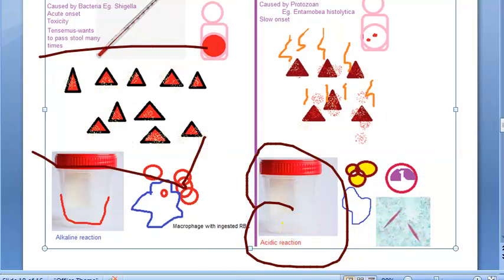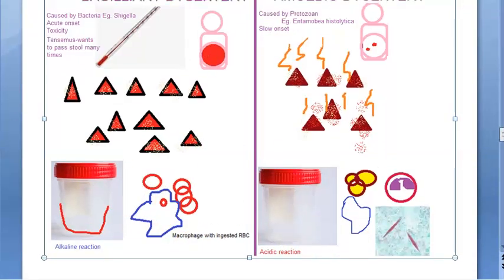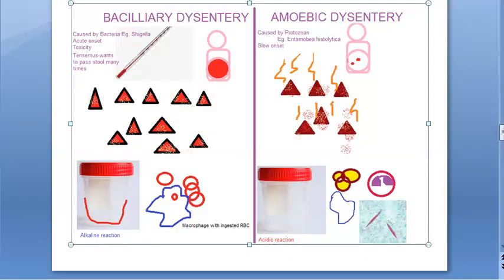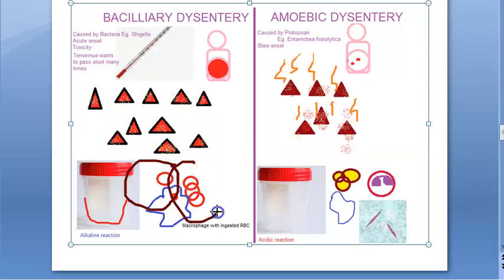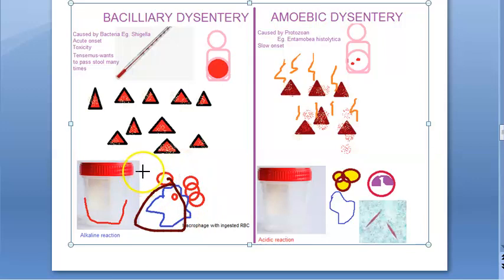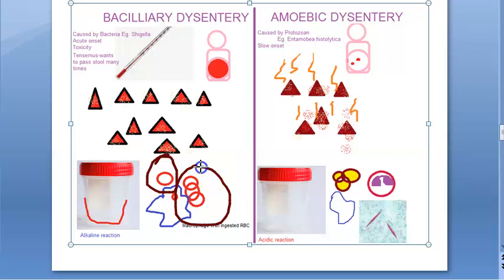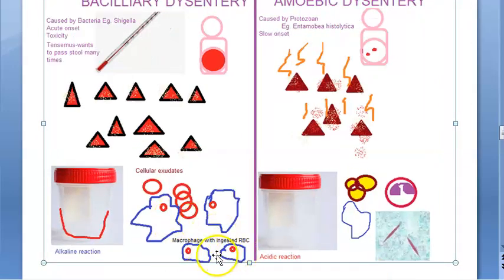Now let us go to the microscopical differences between bacillary and amoebic dysentery. In bacillary dysentery, you will see cellular exudates — feces are less and exudates, blood, and mucus are more. RBCs can be discrete or in rouleaux formation and will be bright red. There can be macrophages which have engulfed these RBCs. Many macrophages will be present. Cellular exudates are abundant in bacillary dysentery.